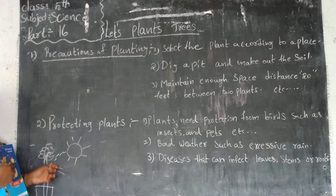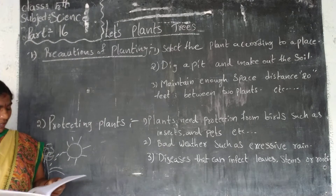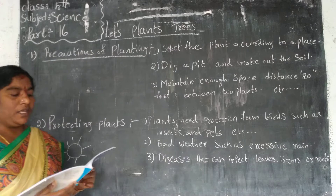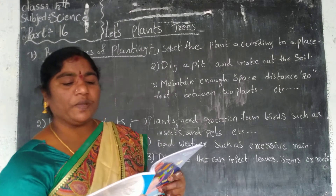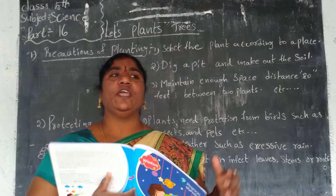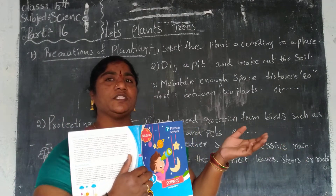The food helps the plant to grow. Next, dig a pit and take out the soil. Select a place where sunlight falls daily.